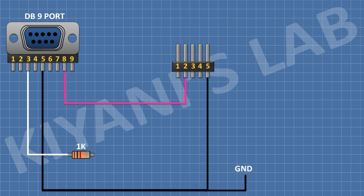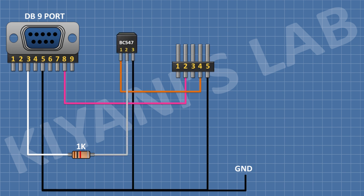Connect pin 2 to pin 3 of the DB9 connector. After that, connect a BC547 transistor: its pin 1 to pin 4 of the male header, its pin 2 to the remaining pin of the 1K resistor, and its pin 3 to ground. After that, connect a 10K resistor with one pin to pin 2 of the BC547 transistor and its other pin to ground.